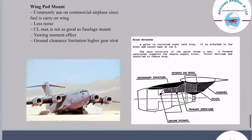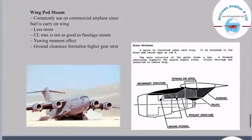The wing pod mount is commonly used in commercial airplanes since fuel is carried in the wings. This configuration has less noise, though the coefficient of lift is not as good as a fuselage mount. It also has a yawing movement effect and ground clearance limitations.